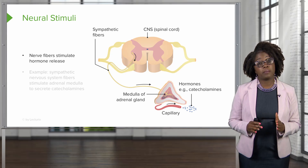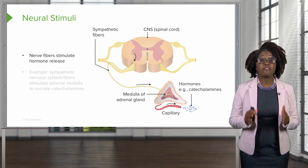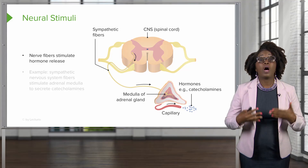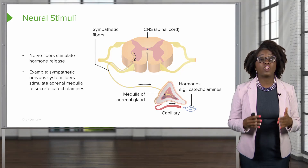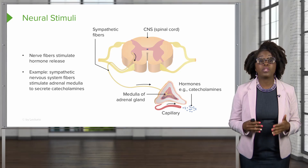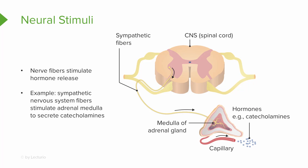A second type of stimulus is a neural stimulus. With a neural stimulus, nerve fibers are going to stimulate hormone release. For example, sympathetic nervous system fibers stimulate the adrenal medulla to secrete catecholamines. Remember that the sympathetic nervous system is our fight or flight system. Catecholamines are hormones such as dopamine, norepinephrine, and epinephrine, which you may know as adrenaline.